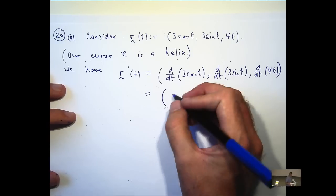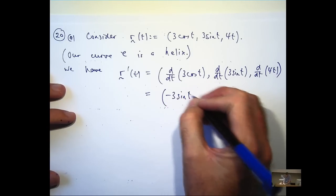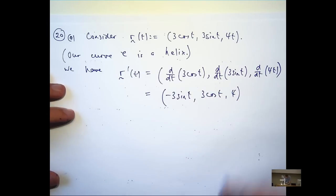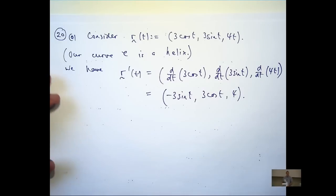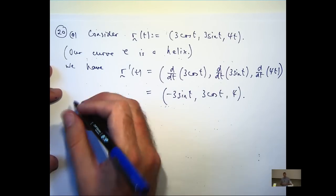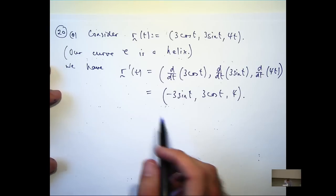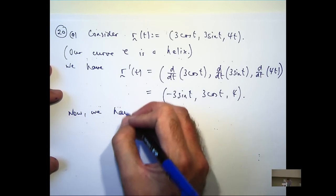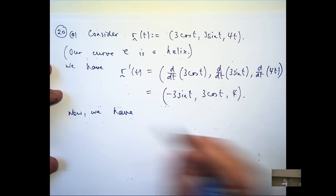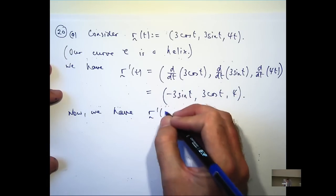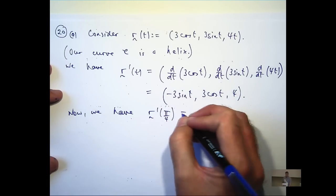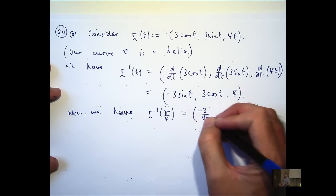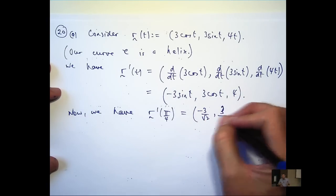And just differentiate in a component-wise fashion. So, we're going to get minus 3 sine t, 3 cosine t and 4. So, at t equals π/4. So, just plug in t equals π/4. So, we're going to get minus 3 on root 2, 3 on root 2 and 4.